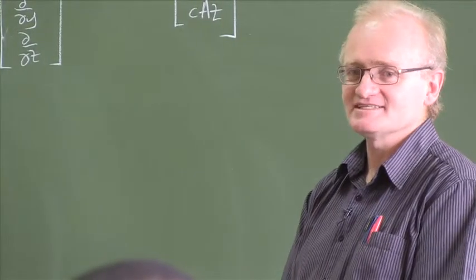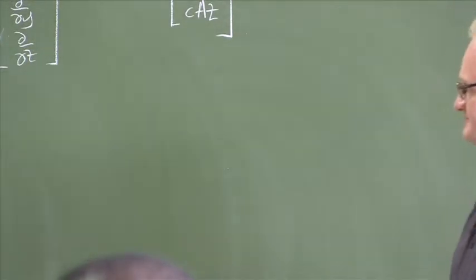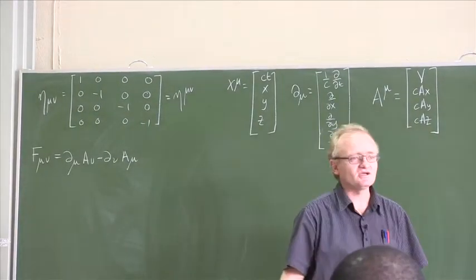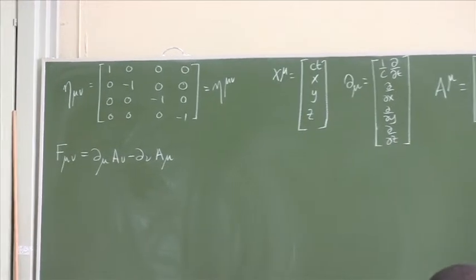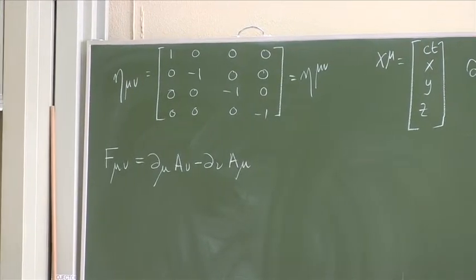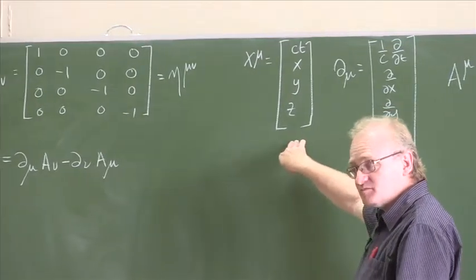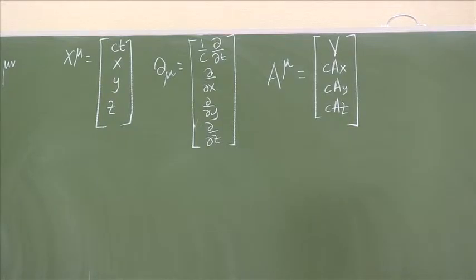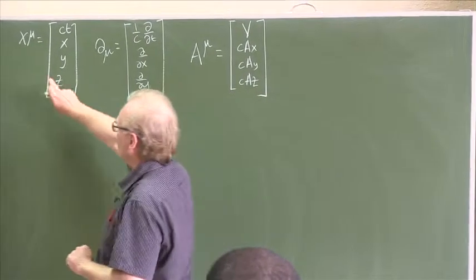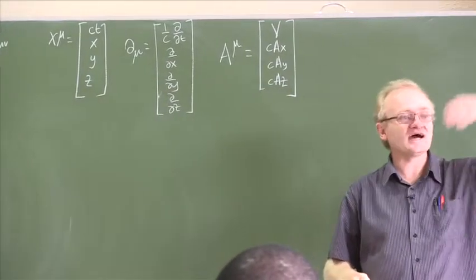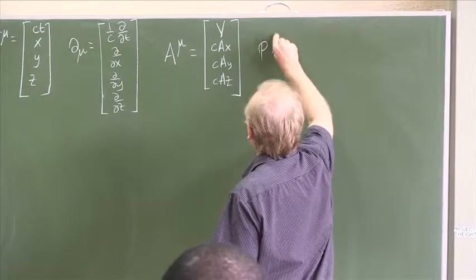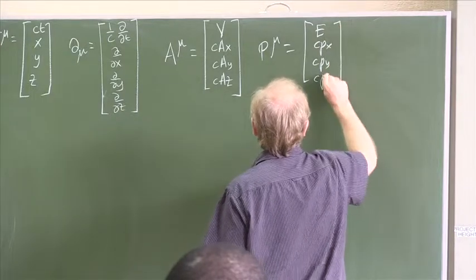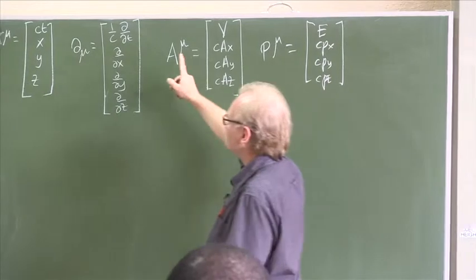Let's review a few things from yesterday. First, we introduced the Minkowski metric matrix, eta mu nu — with indices up it is the same as eta mu nu with indices down. We also introduced four-vectors: the four-vector for position x mu, the four-vector derivative d mu, the four-vector for the potentials A mu, and the four-momentum p mu. We usually define four-vectors with the index up.